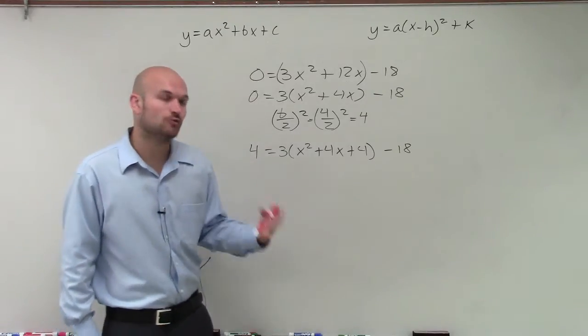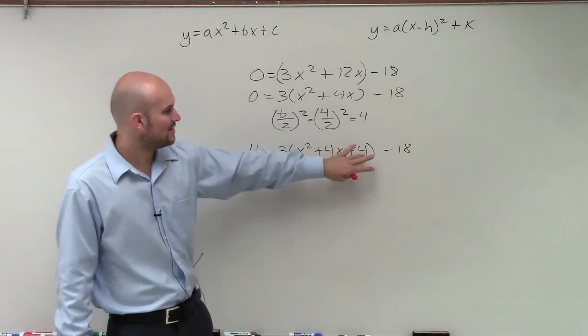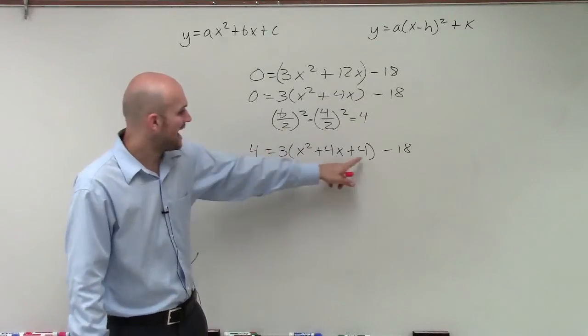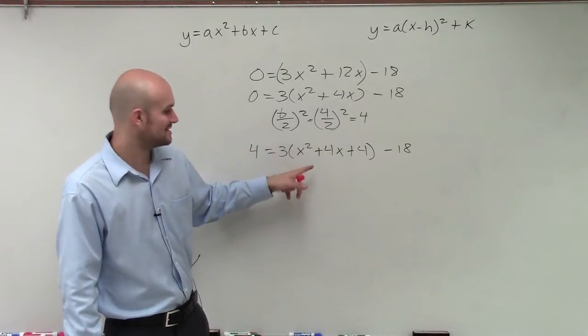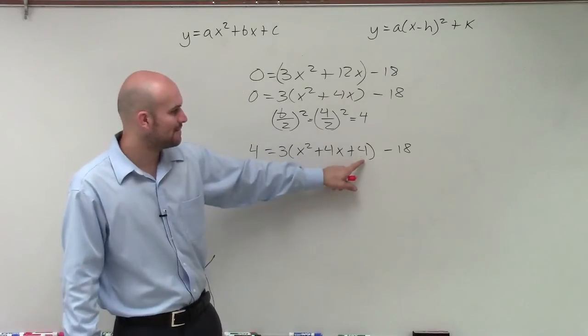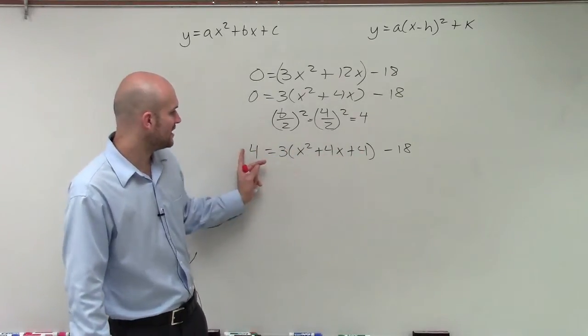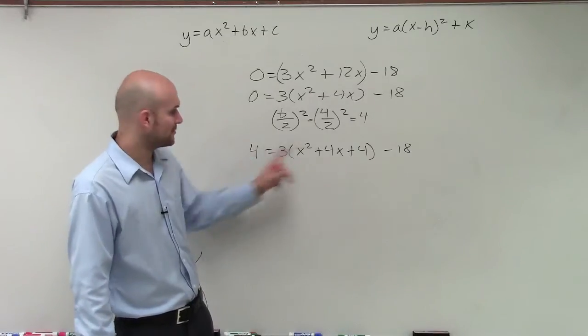However, my equation is not equal right now, because you can say yes, you added a 4 on both sides. But this 4 is being multiplied by 3, as is everything else in this parentheses. So since everything in here is being multiplied by 3, if I added the 4 here and here, well, this 4 is not being multiplied by 3, but this one is.